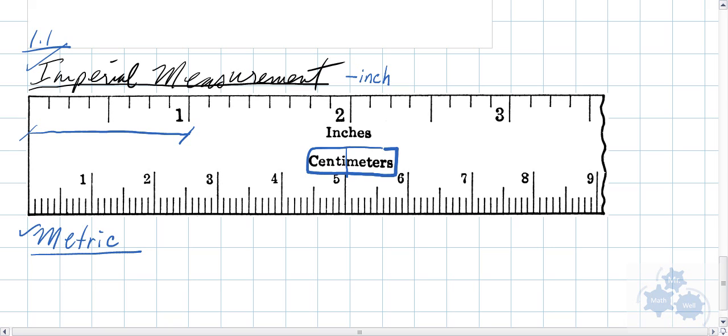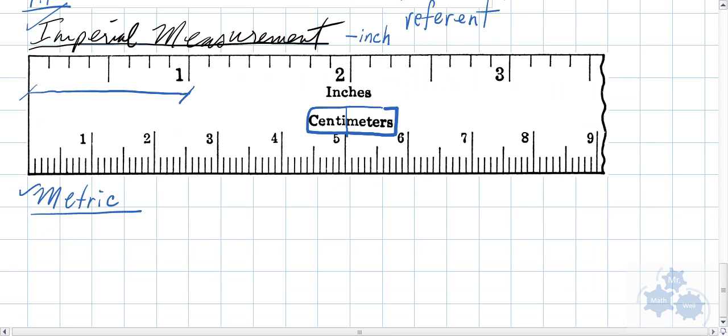Now, an inch is, you know what we're going to do? We're going to talk about reference. A referent, and I'm going to write that down, referent, is sort of how you can estimate this length. So an inch. Now, there's different, for different people, it's different. For myself, it is literally the width of my thumb at the widest point is exactly one inch.